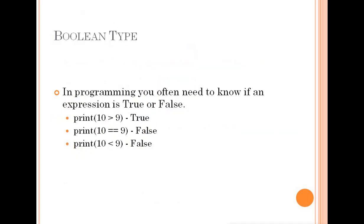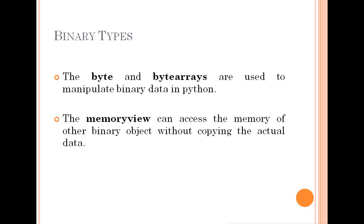Next is Boolean Type. Boolean is used in Python the same as in other languages. If an expression is true or false, that is a boolean data type. Next is Binary Types, which include Bytes, Byte Arrays, and Memory View. Bytes and byte arrays are used to manipulate binary data in Python.